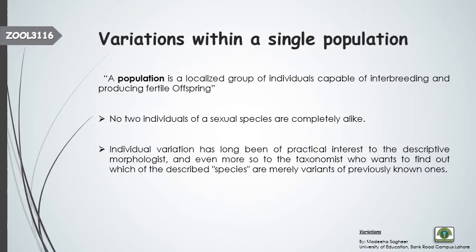Our actual topic is variations within a single population. Population is a group of individuals or organisms that are living in a particular specified area. The precise definition of population is: a localized group of individuals capable of interbreeding and producing fertile offspring — meaning they can sexually mate with each other and reproduce healthy young ones.